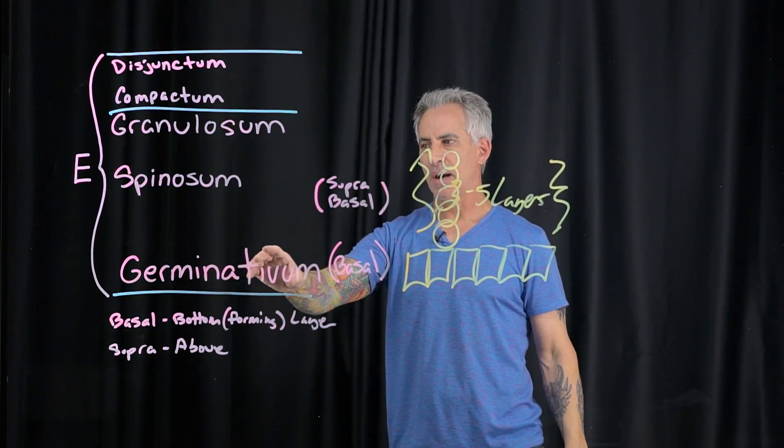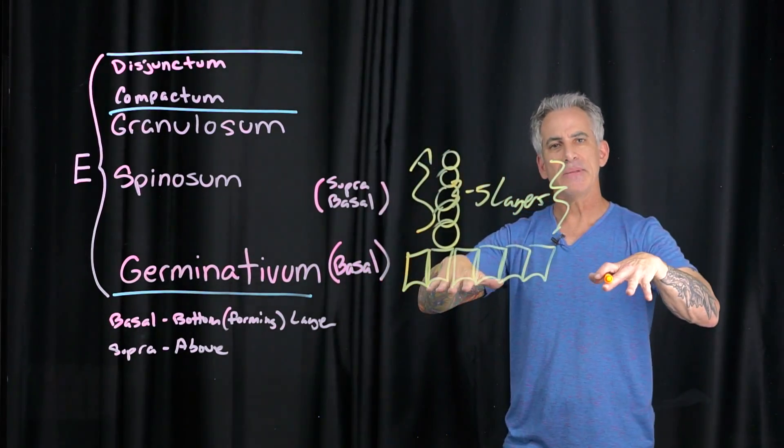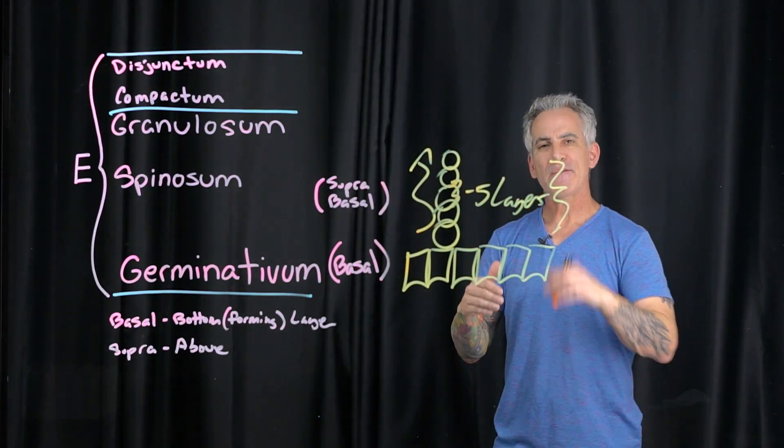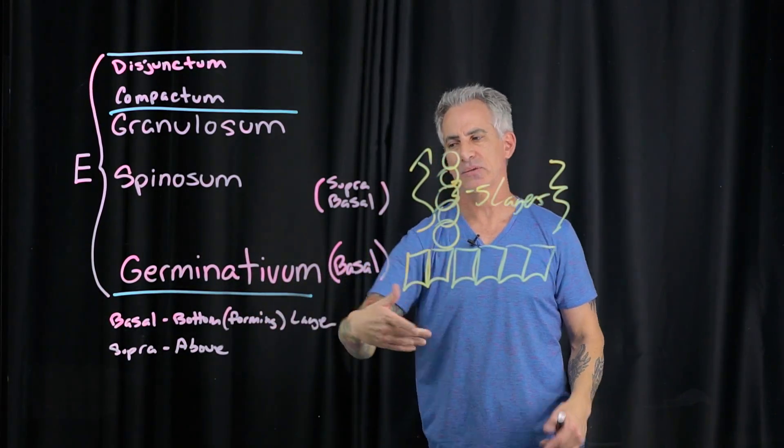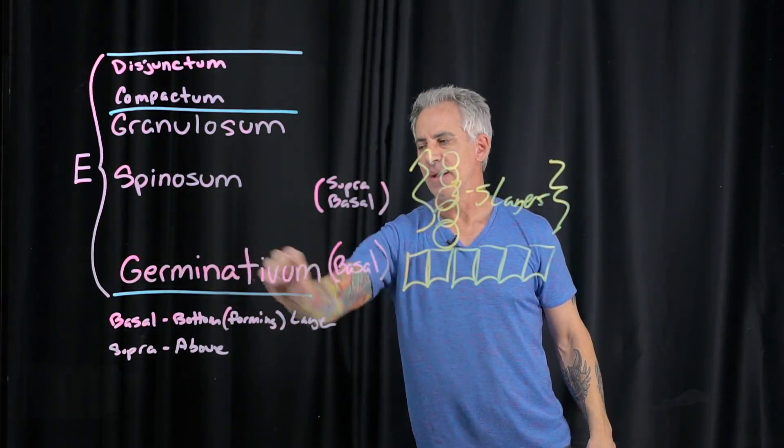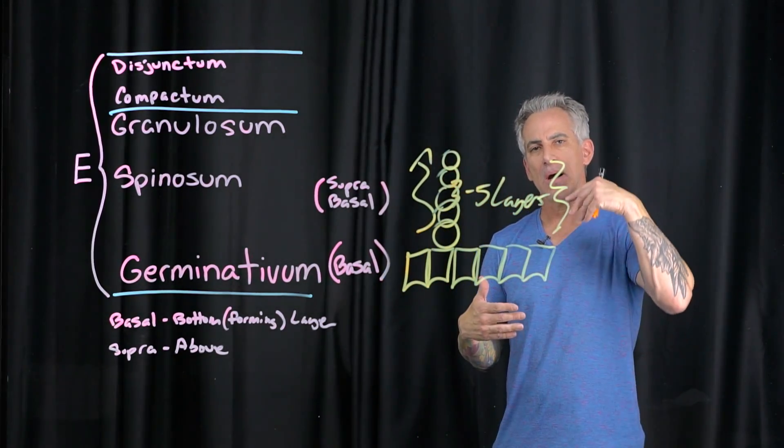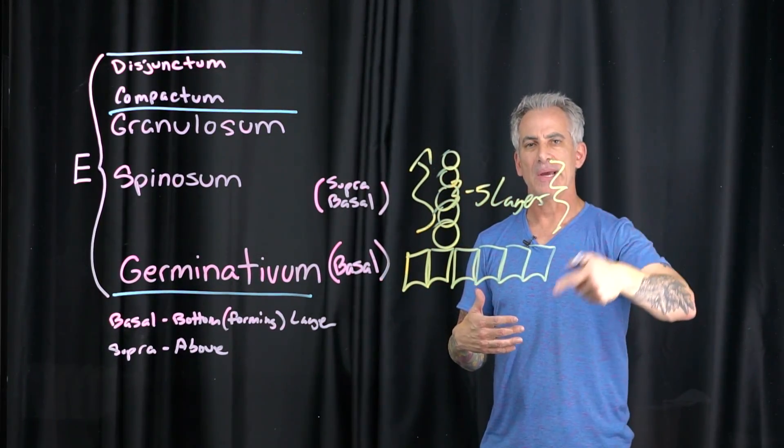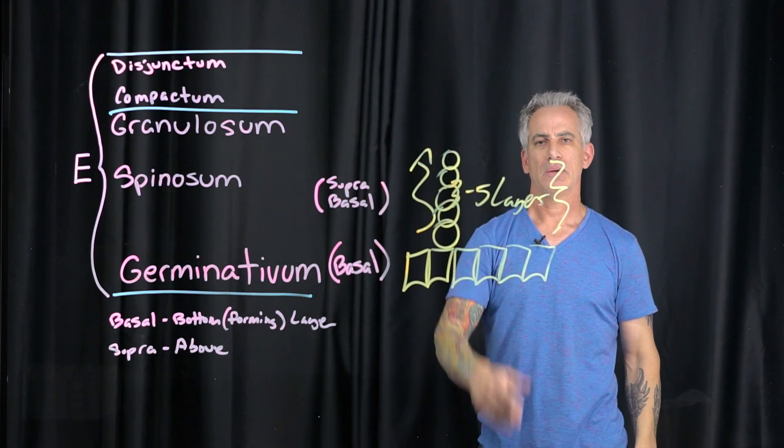The basal layer meaning bottom, bottom of the epidermis, forming the bottom layer which is what I wrote there just to remind myself and you when you read it. And then supra meaning above the basal layer, suprabasal, three to five.